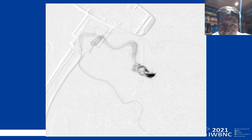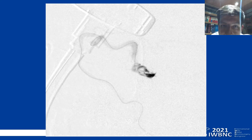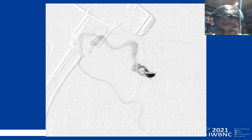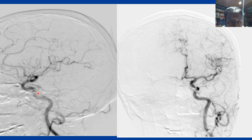Confirming this venous relationship, once proper placement of the microcatheter was confirmed through transvenous contrast injection, onyx embolization of the cavernous sinus was started, as shown in this image. At one-month follow-up, suppression angiography demonstrated total occlusion of the left-sided indirect carotid cavernous fistula.